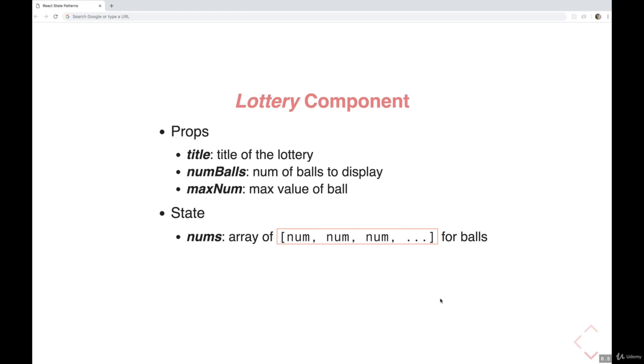So all we need is an array of numbers. That's all that changes. Those numbers are random numbers. Maybe there's four random numbers, maybe there's six or 10. Maybe it's from 1 to 40 or 1 to 10. It doesn't matter. But it's just an array, a list of numbers. And that's the only thing that needs to be stateful in the whole application.